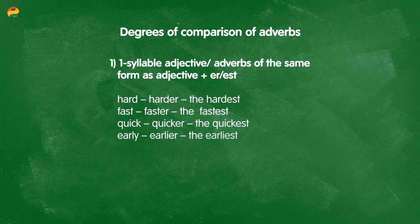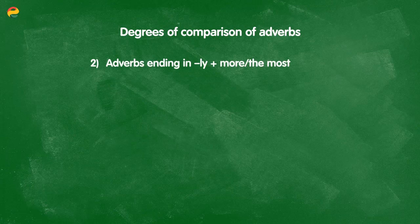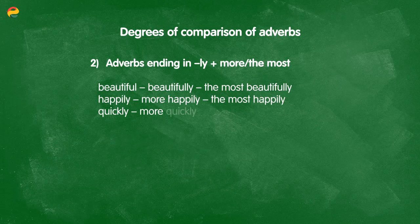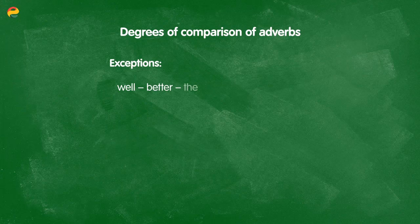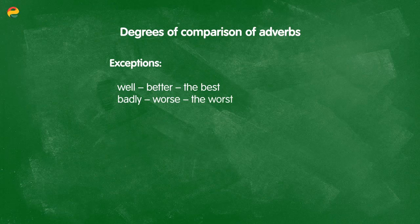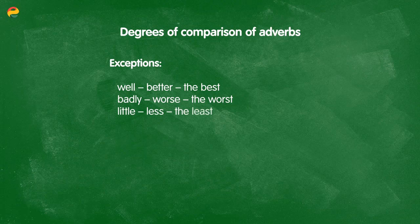And early, earlier, and the earliest. For adverbs ending in -ly, we simply add 'more' or 'the most'. For example: beautifully turns into more beautifully, or the most beautifully. And finally, be careful with the exceptions here. Well becomes better and the best. Badly or poorly becomes worse and the worst. Little becomes less and the least. And finally, much becomes more and the most.